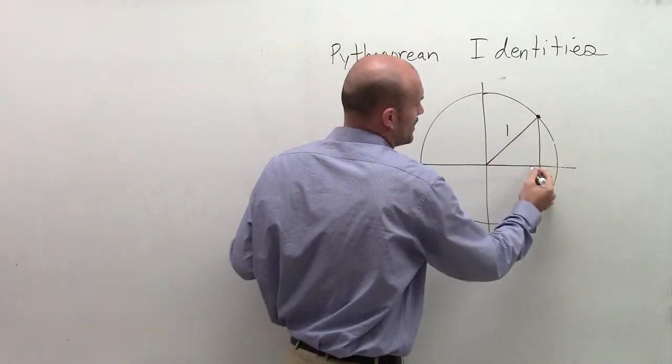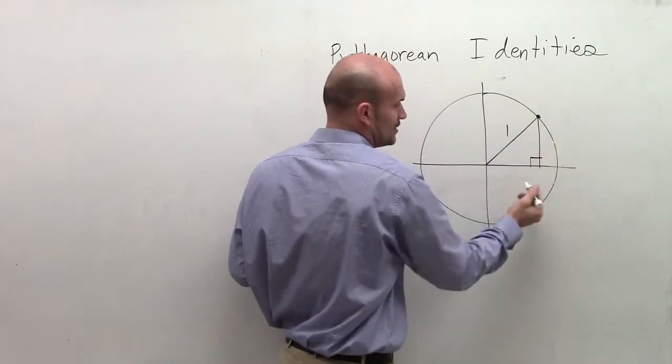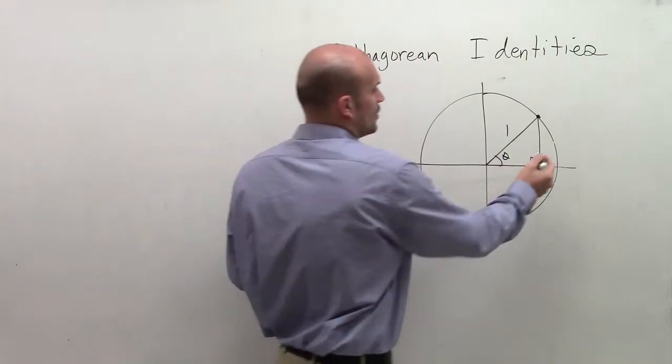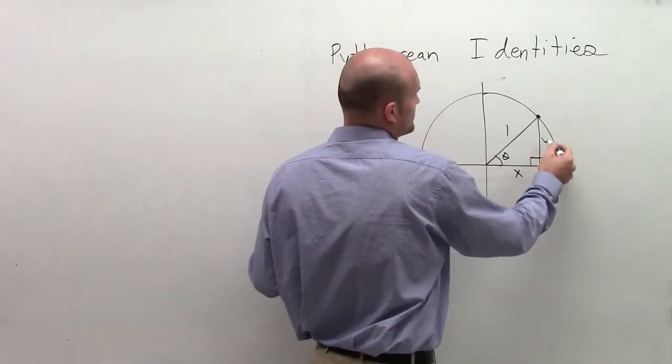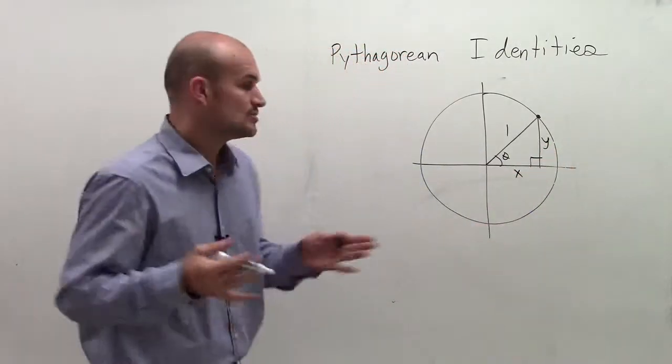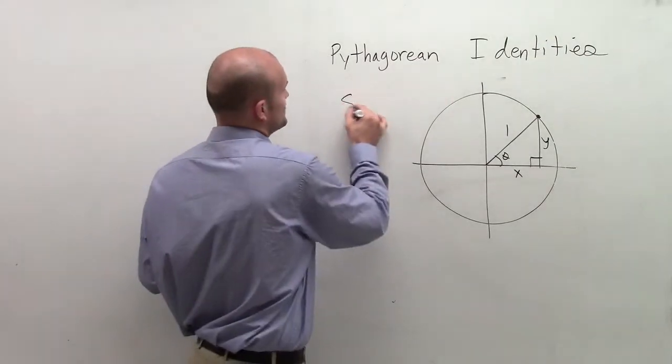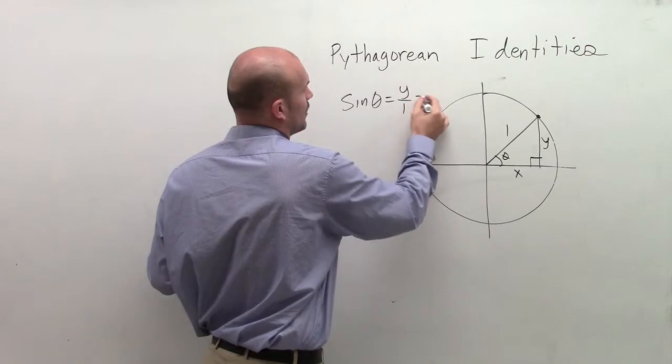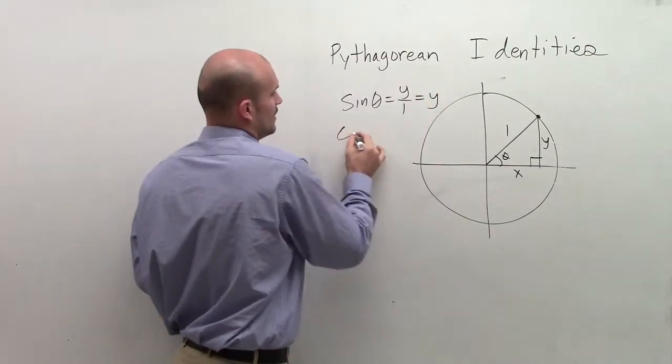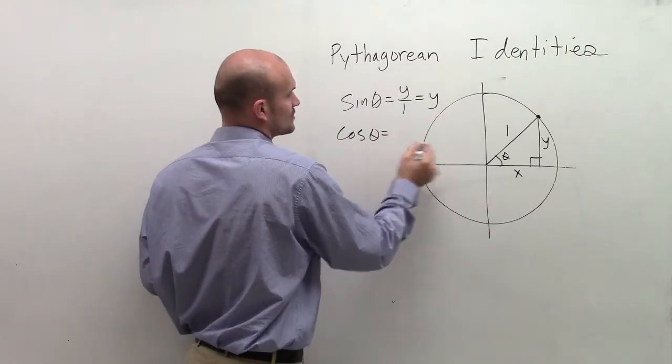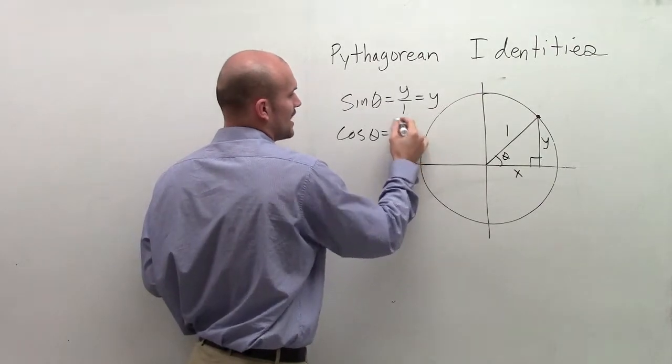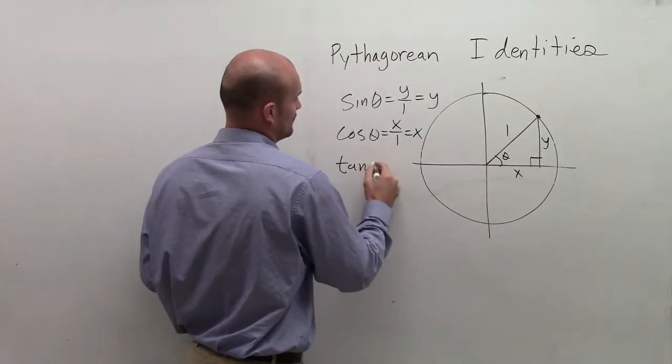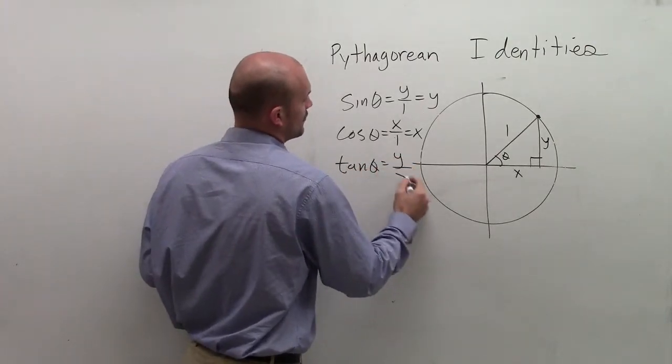When I create a right triangle by drawing a perpendicular line down to the x-axis and create my angle theta, one thing we determined was we can now rewrite our triangle sides as x and y. By using trigonometric identities, we said that sine of theta equals y over 1, which equals the y-coordinate, and cosine of theta equals x over 1, which equals x. Then tangent of theta equals y over x.